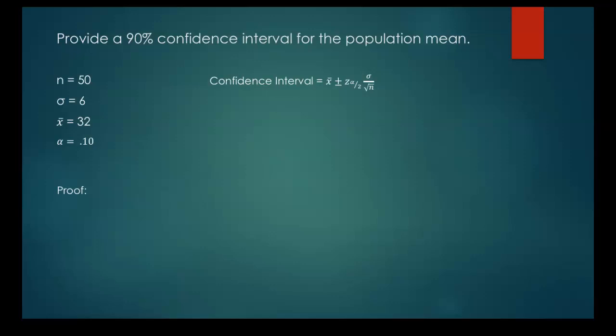So our sample size was 50, our population standard deviation was six, our x̄ was 32, then we come to alpha. Alpha is our level of significance. We find that by taking 100% minus whatever our confidence level is. So our confidence level here is 90, so 100 minus 90 and we get 10. So alpha is 0.10.